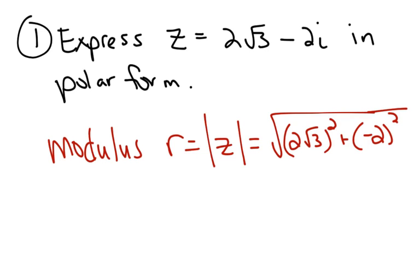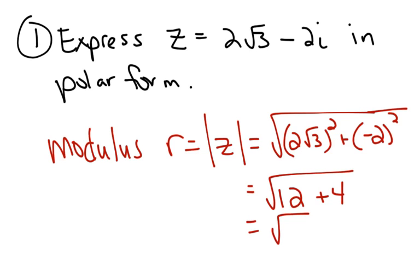When you square 2 the square root of 3, you get 12. When you square negative 2, you get 4, which gives the square root of 16, which is 4. So the modulus is 4.